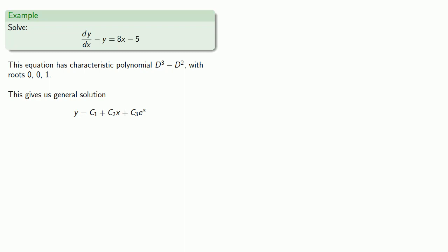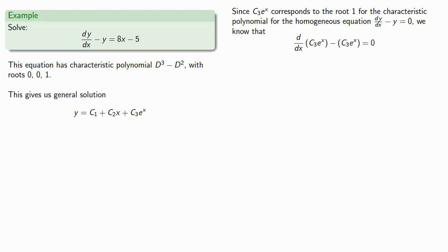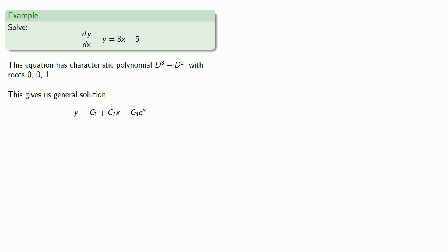So here's an important simplification. Since c_3e^x corresponds to the root 1 for the characteristic polynomial for the homogeneous equation dy/dx minus y equals 0, we know that when we substitute this into our equation, this part will be 0, and the linearity of the derivative will allow us to ignore this part of the general solution. What that means is we don't need to worry about this part of our general solution because it will satisfy the homogeneous equation and, in particular, it doesn't matter what c_3 is. It's never going to give us 8x minus 5. So we only need to find c_1 and c_2 where c_1 plus c_2x solves our original differential equation.